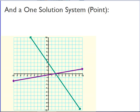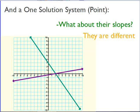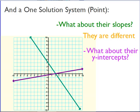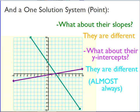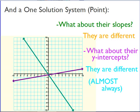In a one-solution system, where the answer is just going to be a point, what can we say about their slopes? Well, since they're going off in different directions, their slopes are going to be different. And what about their y-intercepts? Their y-intercepts are going to be different almost always. I say almost always because what if this line were over here and their y-intercept was exactly the same? I still have different slopes and this is still a one-solution system — but their slopes will always be different.